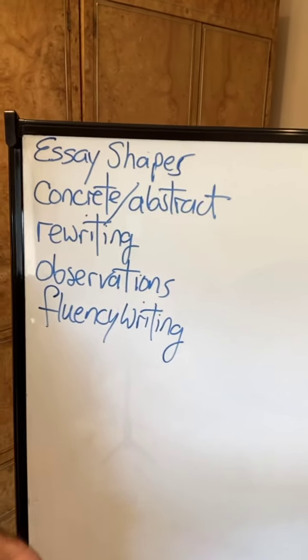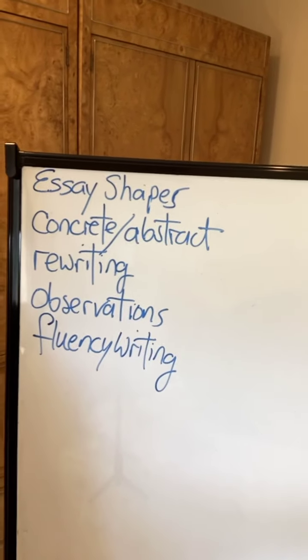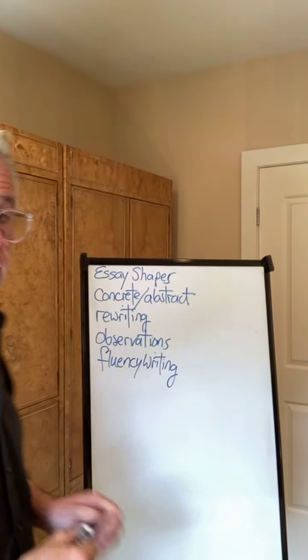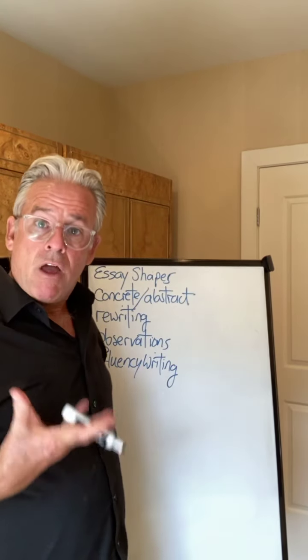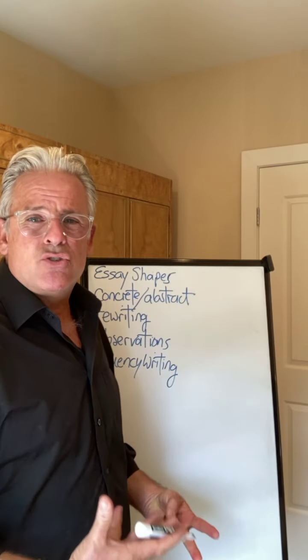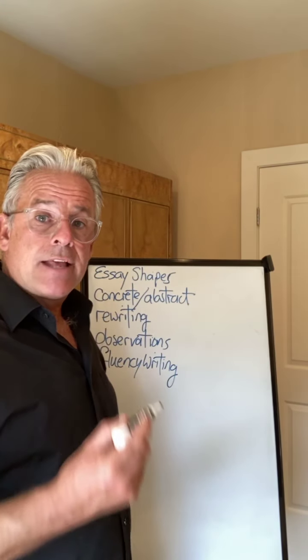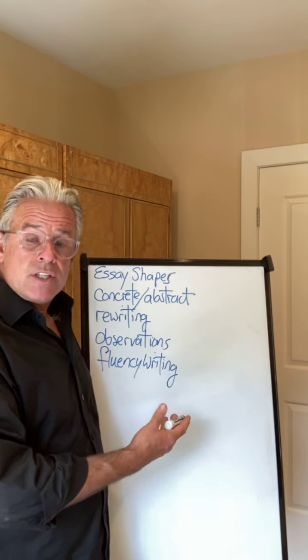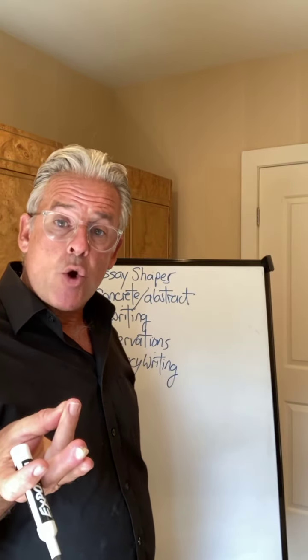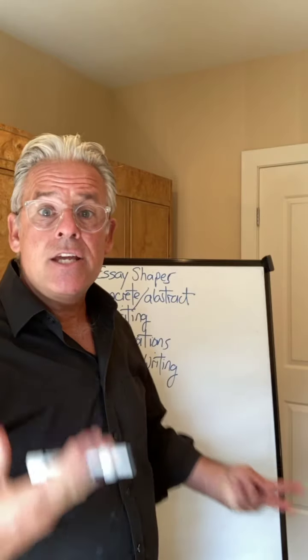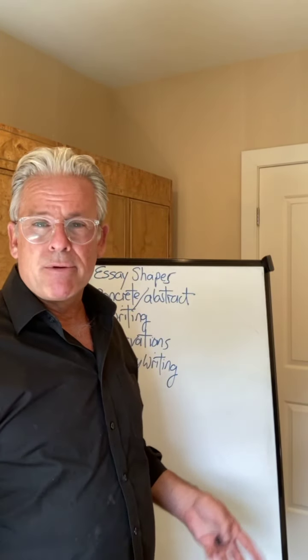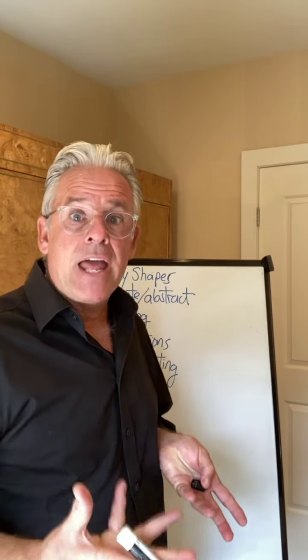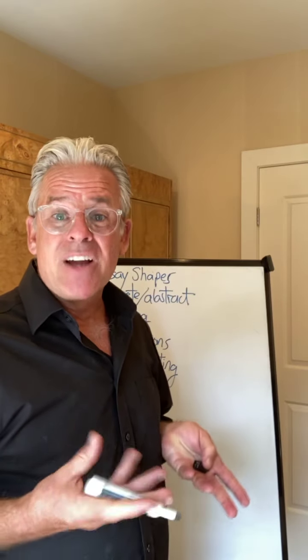We've been practicing five elemental writing skills that all college writers need, and these are going to become more and more familiar as we continue in the weeks ahead. We've been writing essay shapes — we wrote a fable a couple of times and we've been using the family story shape in essays four and five. We've been rewriting, doing things multiple times, and writing some observations. Fluency writing has been used to increase speed, focus, and get ideas flowing more freely — it's a wonderful, dependable practice.